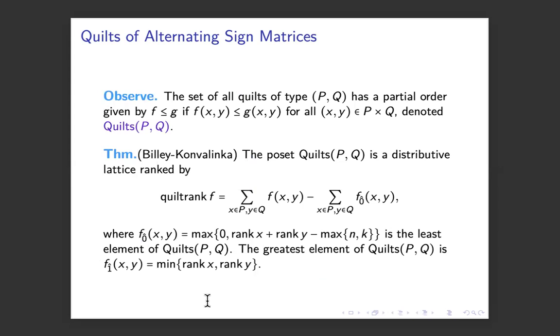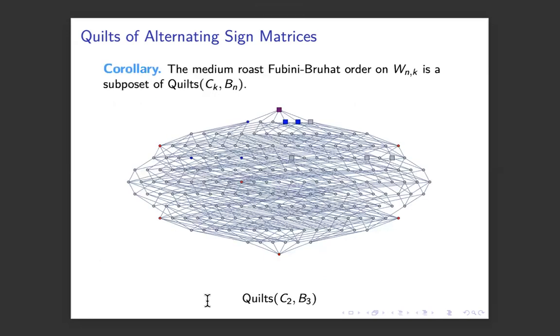And what Matthias and I proved is this is a distributive lattice. It's got a very nice rank function. It's actually got a unique minimal and unique maximal element. It has a lot of lovely properties, this quilt lattice. Here's a picture of the quilt lattice for c2 cross b3. It's getting pretty wild already.